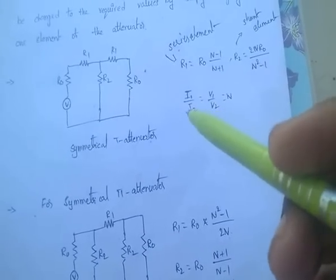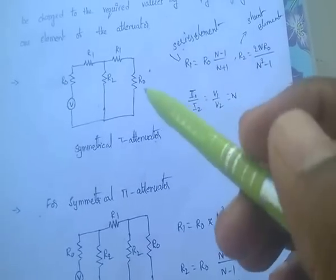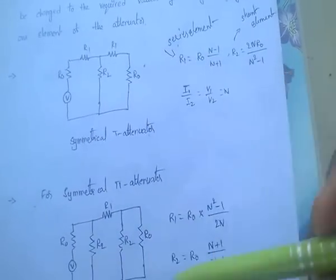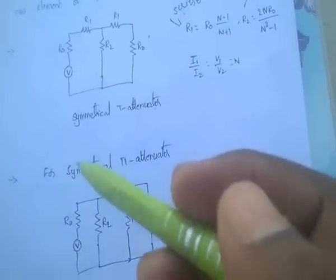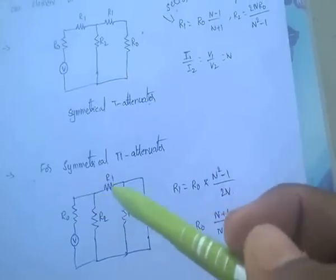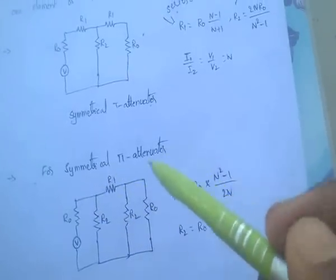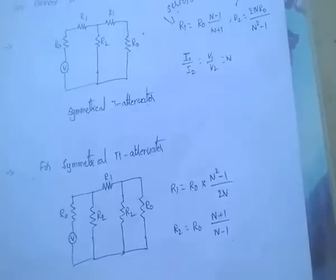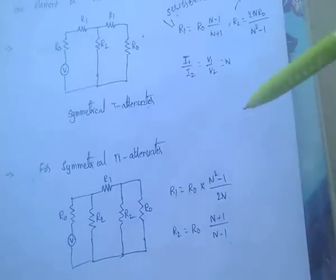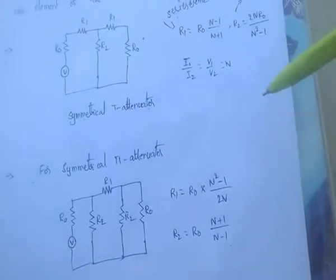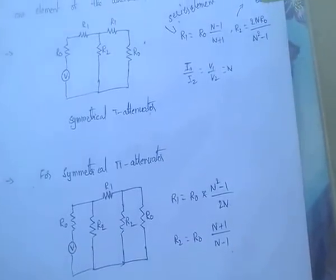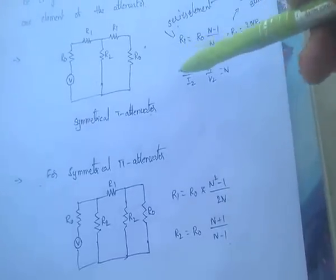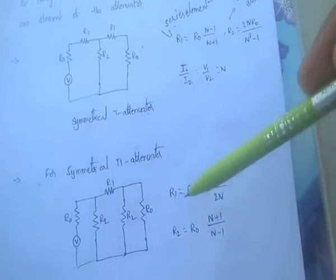In previous exam questions, one question was from symmetrical T-network and symmetrical pi-networks. He asked about series element and shunt elements of the pi attenuator, but all four options given were wrong — the options belonged to the symmetrical T-network, not the pi-network.